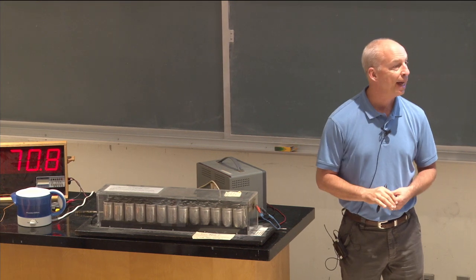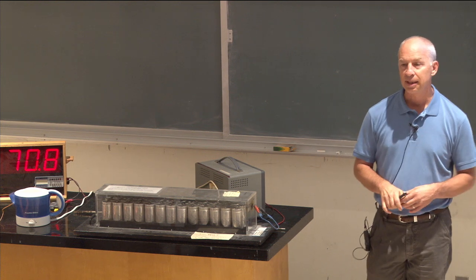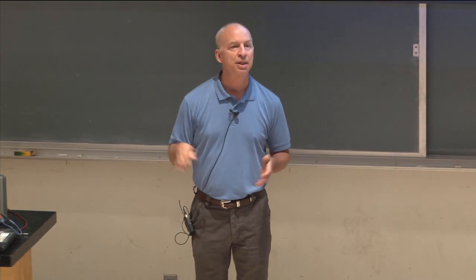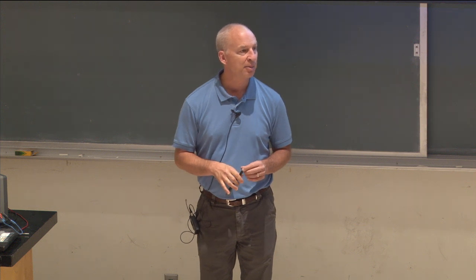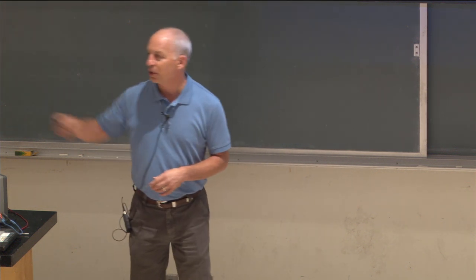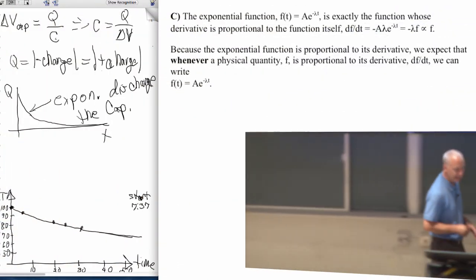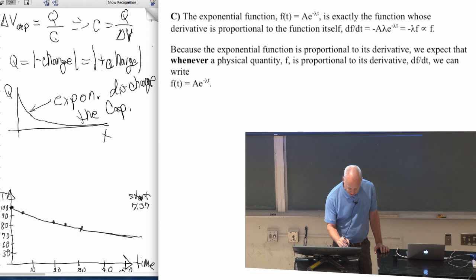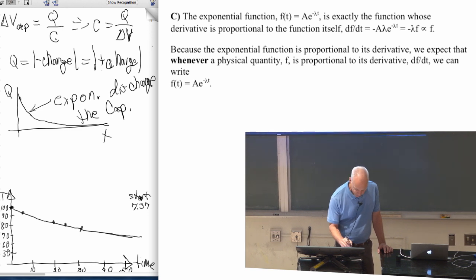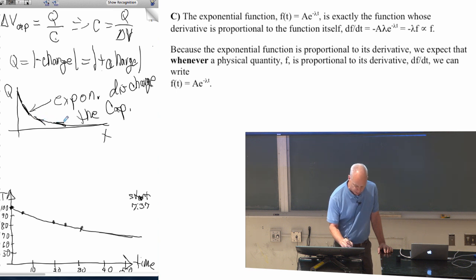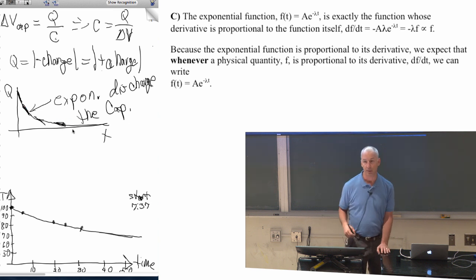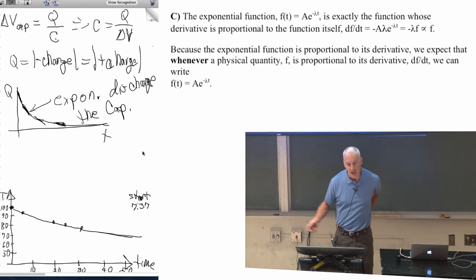And so the rate of change of the temperature drops as time goes on. And that is what an exponential does. The slope is always proportional to the value. So the slope is big when q is big. The slope is smaller when q is smaller. And as q goes to zero, the slope goes to zero. And that's what an exponential function is designed for.